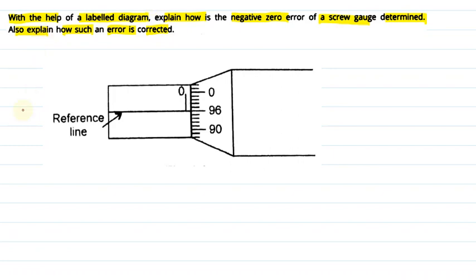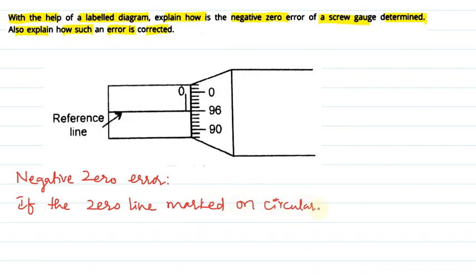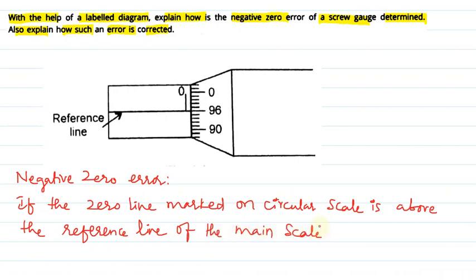Let us see the answer for this question. First let us define what is negative zero error. If the zero line marked on circular scale is above the reference line of the main scale, then there is a negative zero error.